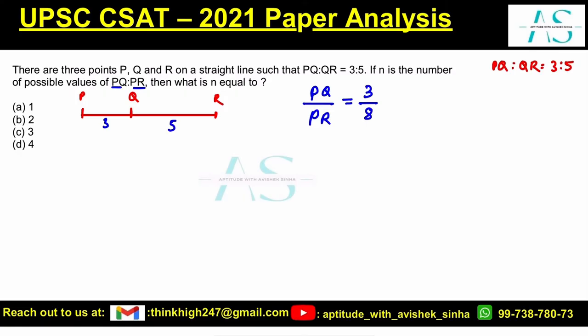This is one possible value: 3/8. PQ/PR is 3/8, and n represents the number of possible ways. Can I say it is one way? 3/8 is one particular value, so the possible answer could be one. But look, the options are two, three, or four, so I should think more.